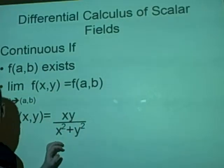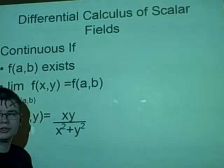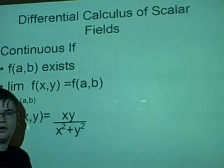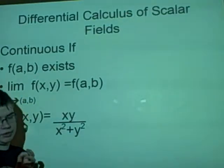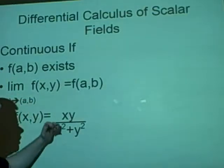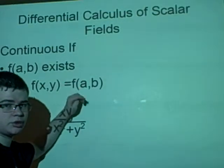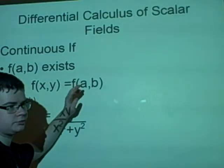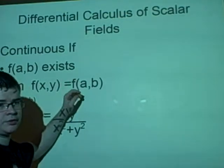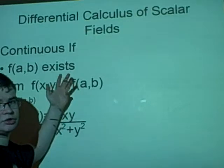Alright, now a scalar field is a real function of two or more variables. So we can have an example where f(x,y) is a scalar field because it has two variables x and y. f(x) isn't, because it only has one. f(x,y,z) has three, so that is as well.